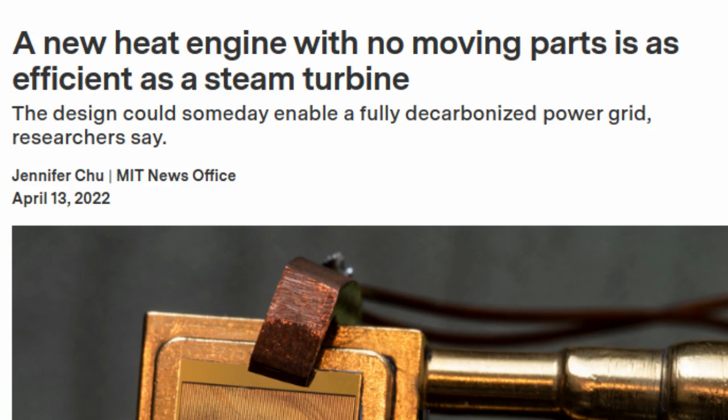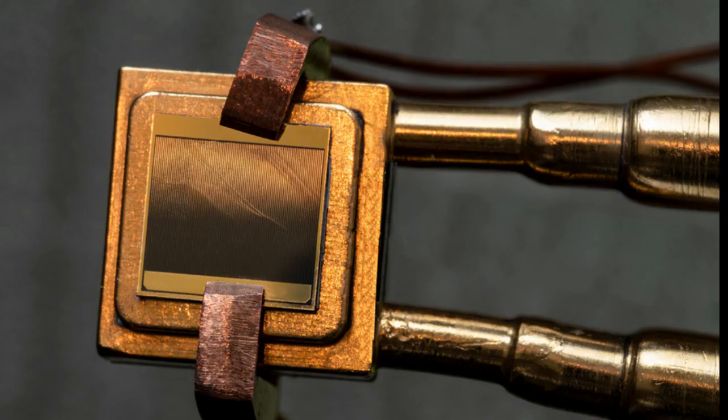With the new TPV cell, the team has now successfully demonstrated the main parts of the system in separate small-scale experiments. They are working to integrate the parts to demonstrate a fully operational system. From there, they hope to scale up the system to replace fossil fuel-driven power plants and enable a fully decarbonized power grid, supplied entirely by renewable energy.